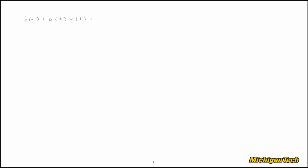Here is the system we're going to work with: x-dot plus p(t), some function, times x(t) equals input function u(t). We'll assume that the initial condition x(t₀) is known. What we want to do is solve this — that is, find some function x(t).